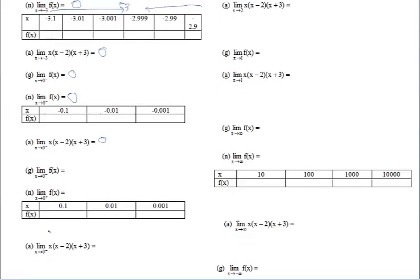The same applies for the limit as x approaches zero from the right. Graphically, as you approach zero from the right and look at the graph, the y-values are going into zero. Numerically, fill in the data table and we'll check those in class. Analytically, plug in zero everywhere you see x, and it confirms the answer is zero.